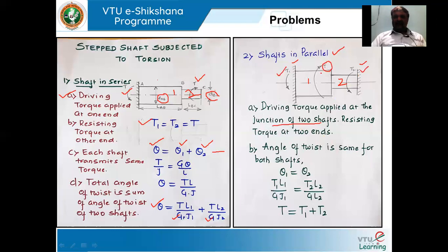In the parallel case, the angle of twist remains the same for both steps since both ends are fixed — so θ1 = θ2. But the torque changes. Substituting: θ1 = θ2 gives T1·L1/(G·J1) = T2·L2/(G·J2). The total torque applied at the junction T equals the sum of the torques in the individual steps of the shaft: T = T_AB + T_BC. That is the key difference between shafts in series and shafts in parallel.